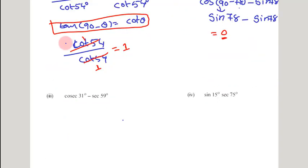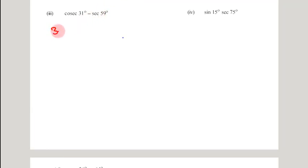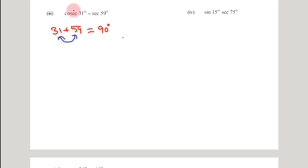So the second answer is 0. Let us see the third problem. In the third problem, we have: cosec 31 degrees minus sec 59 degrees. If you observe — 31 degrees and 59 degrees, adding them, you get 90 degrees. So these two angles are complementary angles to each other.